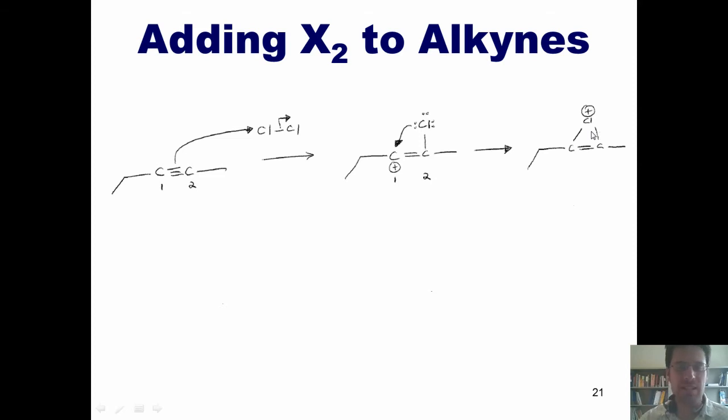What occurs next is this. The free chloride generated in the first step now comes in and attacks one of these carbons. Breaking the carbon-chlorine bond, these two electrons go into this chlorine to quench its positive charge, and it forms this product.